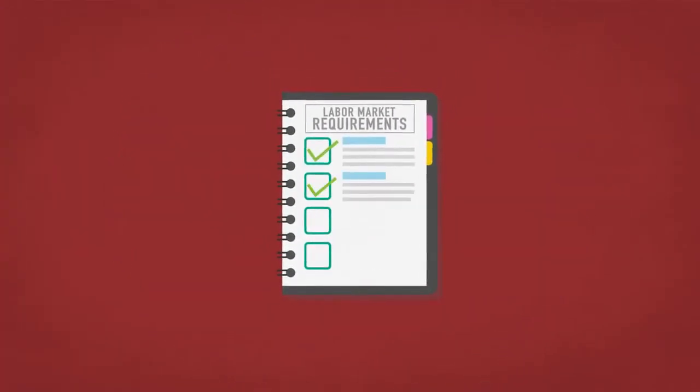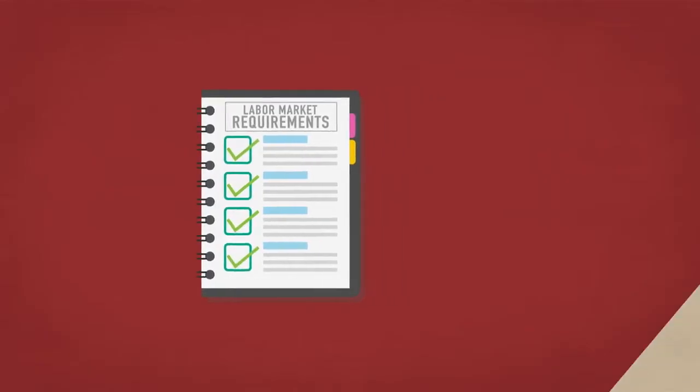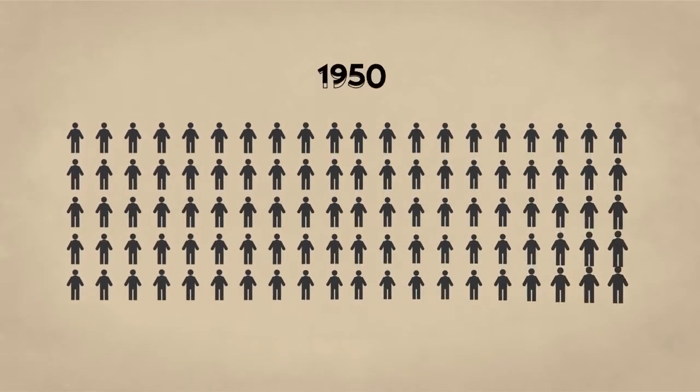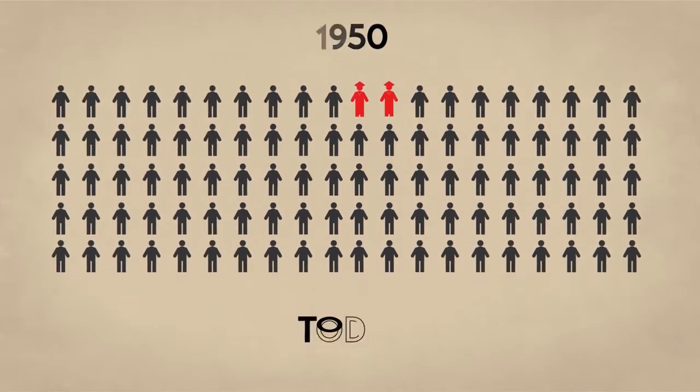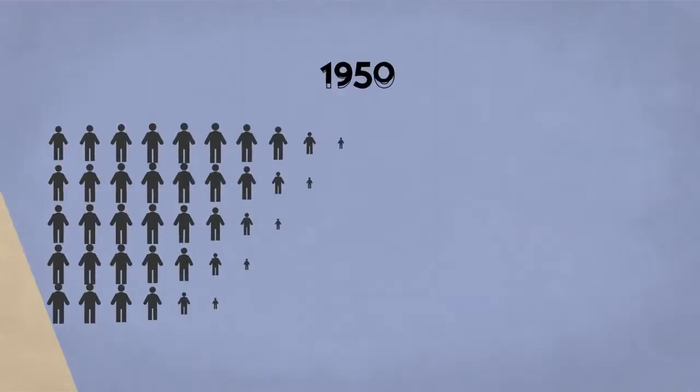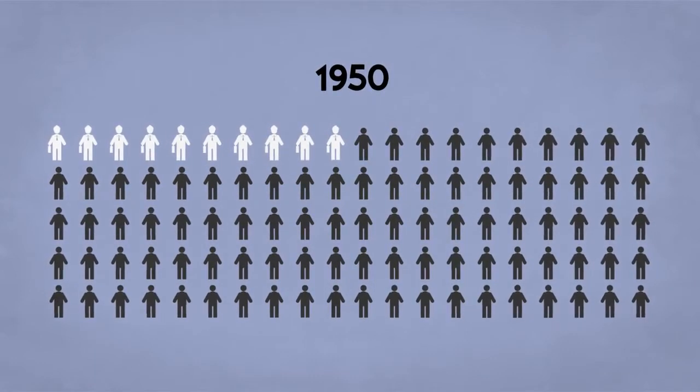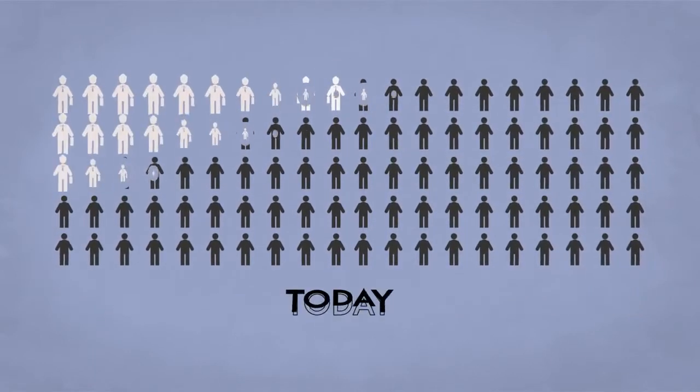This mismatch can be explained, in part at least, by the change in requirements in the labor market. For example, of 100 workers in 1950, only two needed a college degree. Today, it's almost 50. In 1950, only 10 needed prior work experience. Today, it is more than 70.